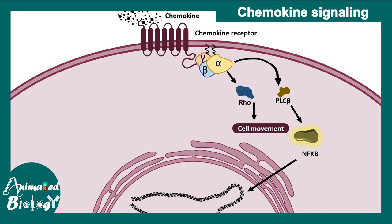The G protein-coupled signaling can also activate Rho GTPases. Rho GTPases are implicated in cell movement, so cell migration and cytoskeletal rearrangement can be triggered by Rho activation.